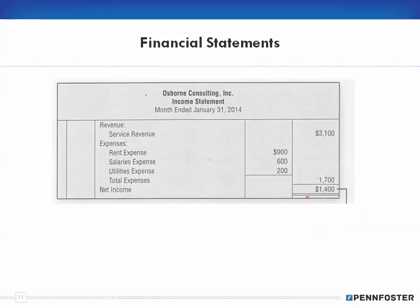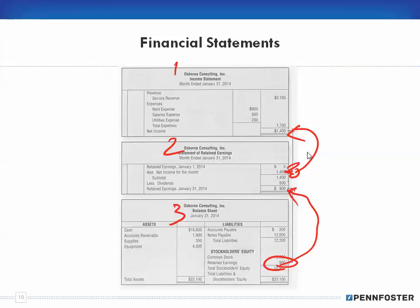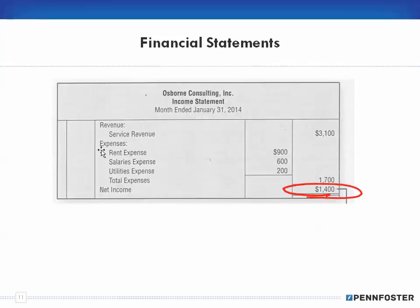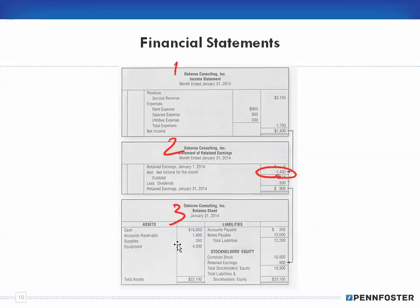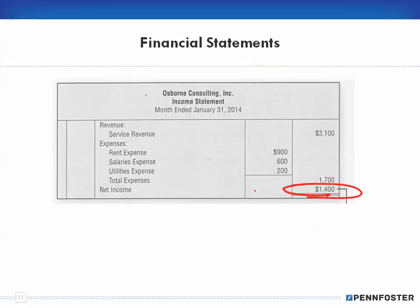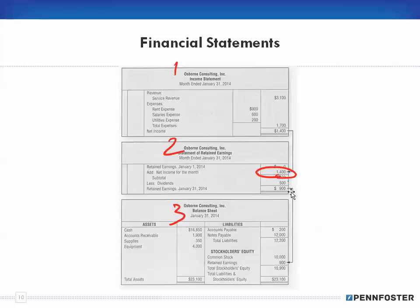This net income of $1,400 is going to carry over to the statement of retained earnings, which we'll cover in the next video. We took the revenue and expense accounts from the trial balance and created our income statement. That net income amount — the profit or loss — will be placed on the statement of retained earnings. Pause and rewind if needed, and feel free to contact an instructor if you have any questions.